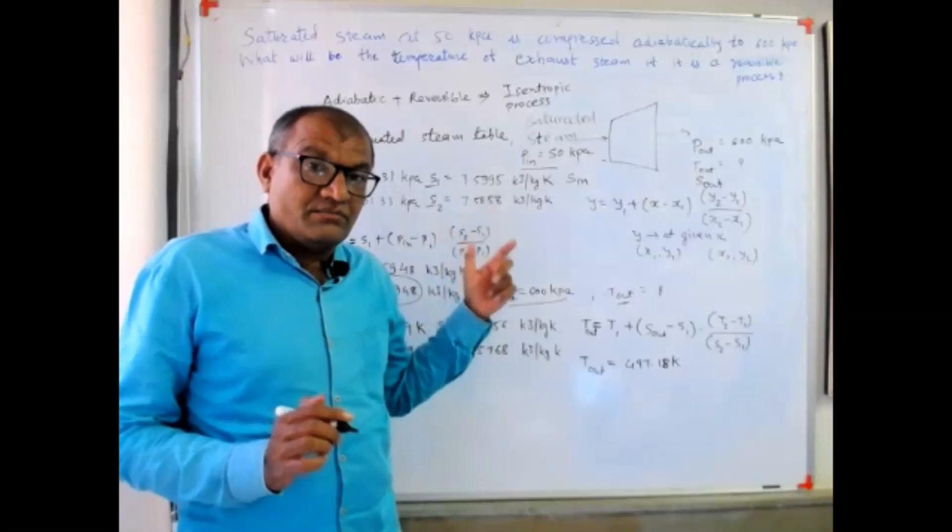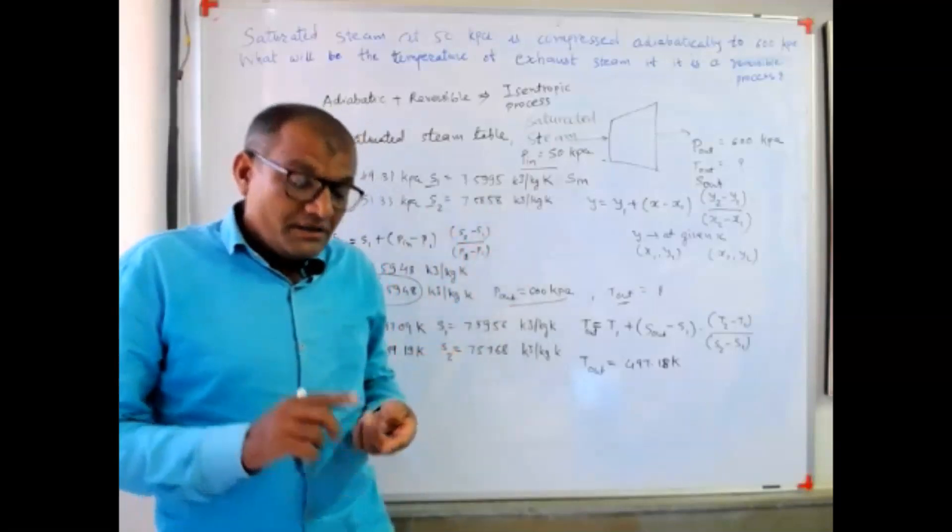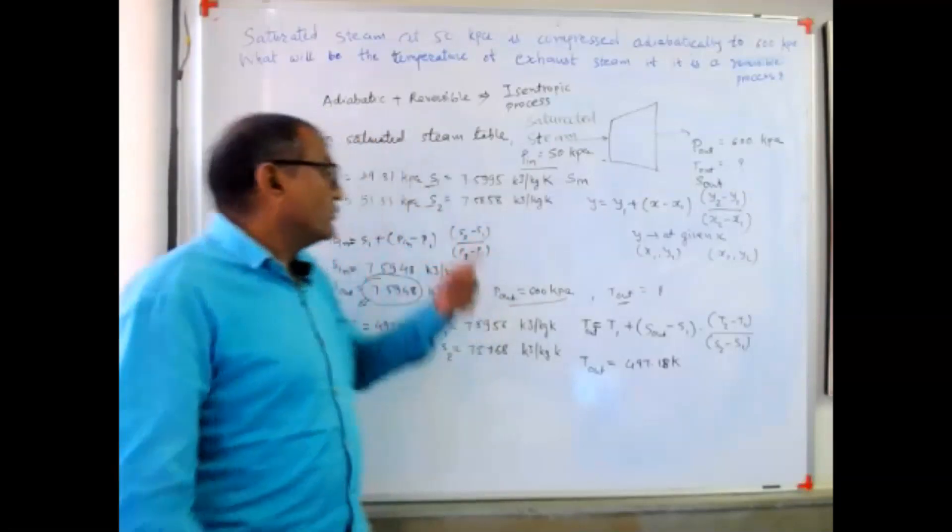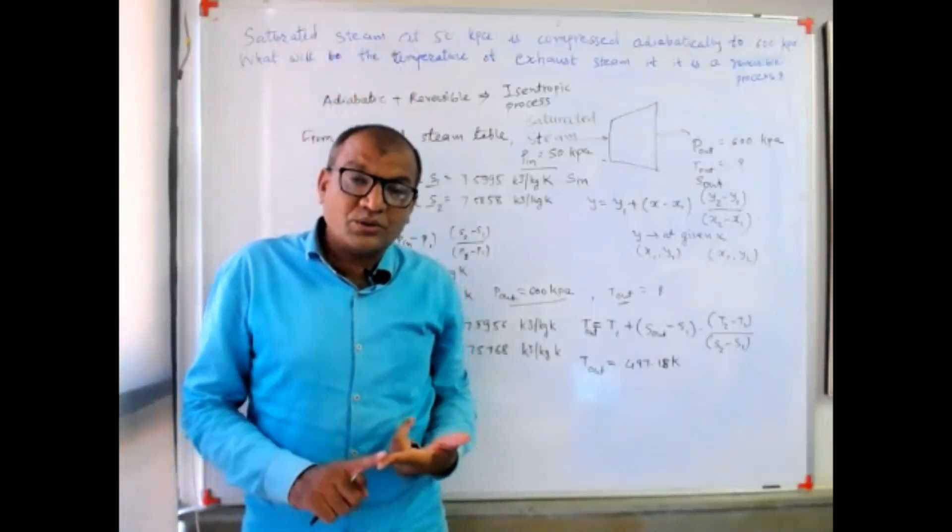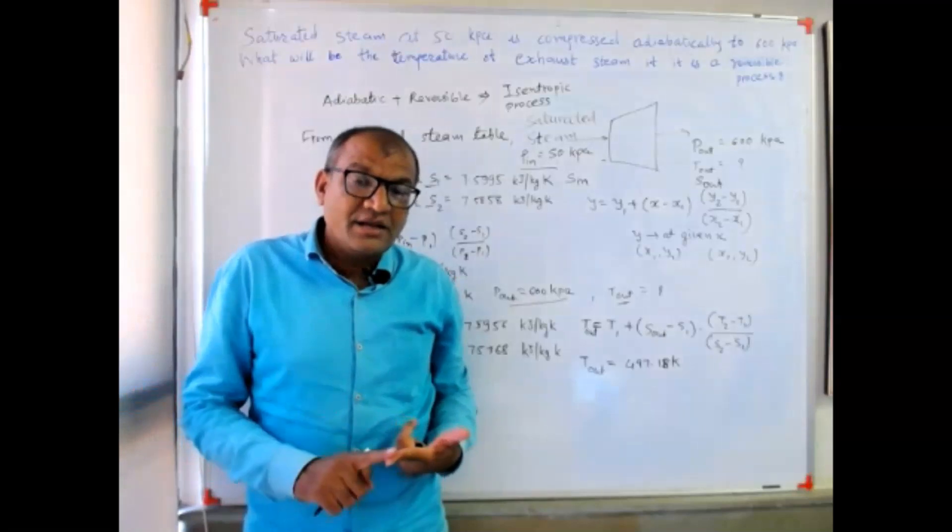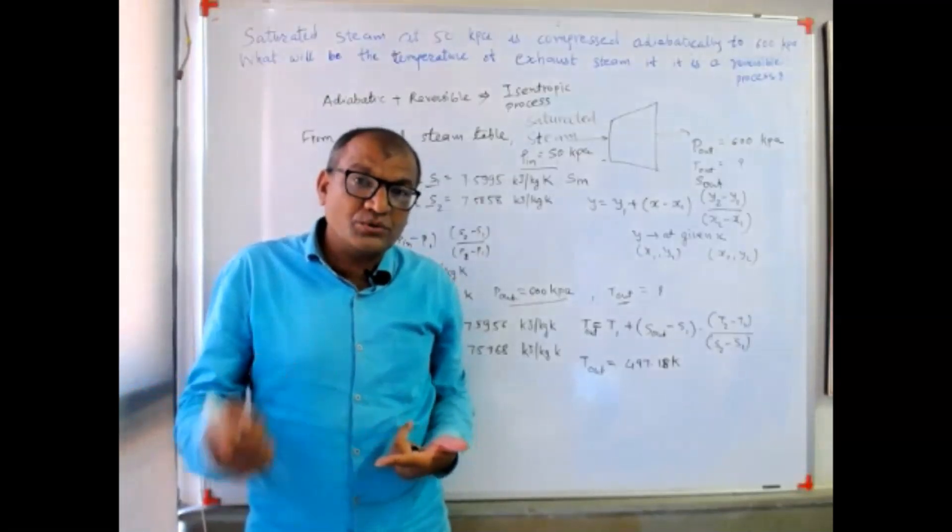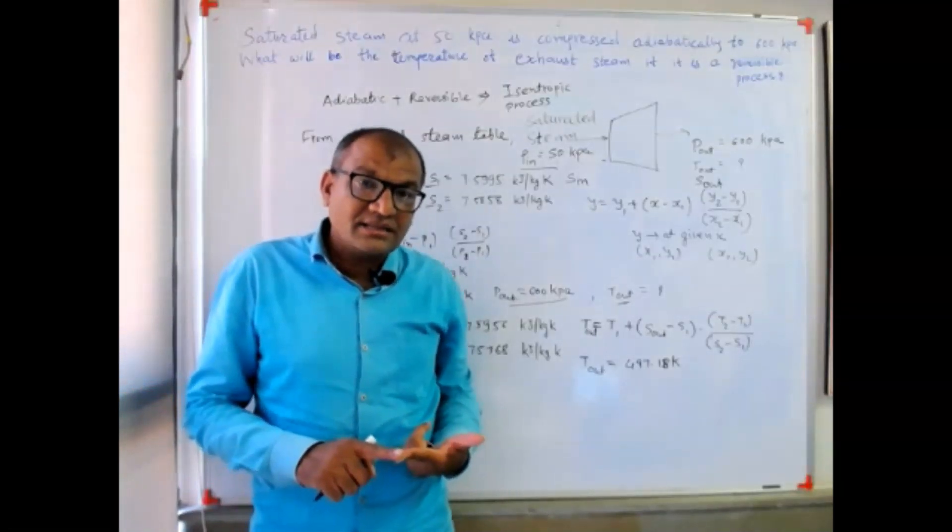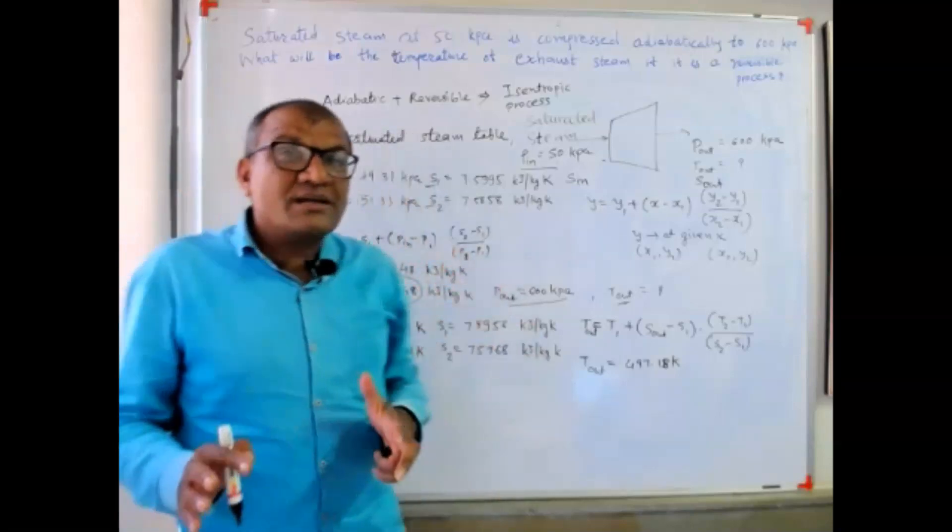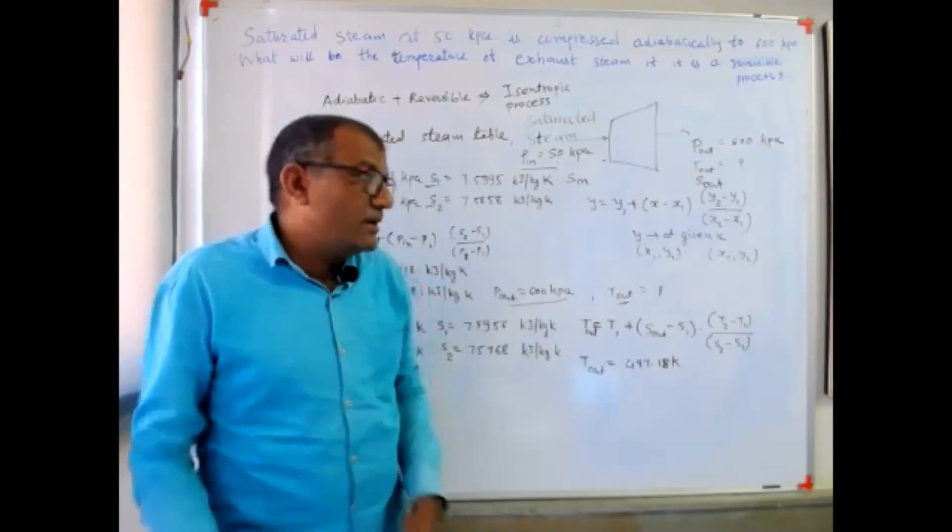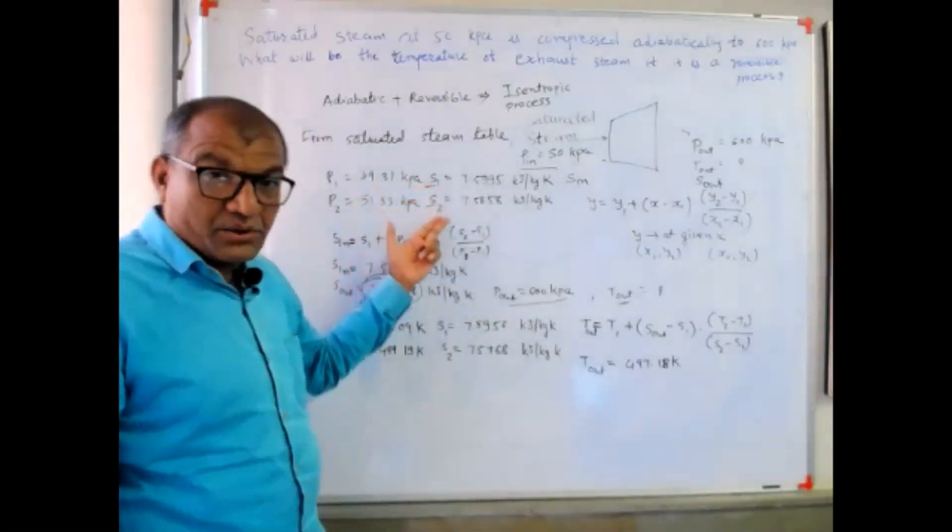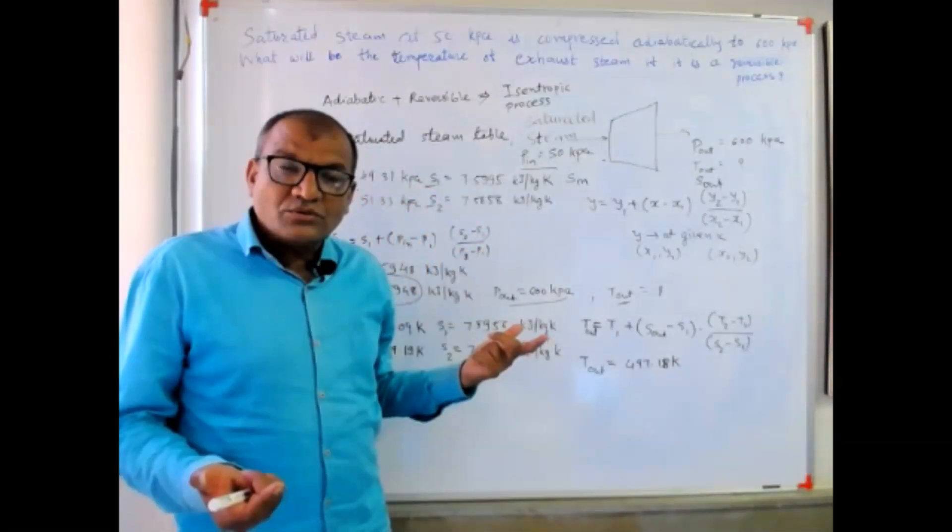When I insert all these values here then I am getting 497.1 degrees Celsius. This is the temperature of exhaust steam. This is a very simple problem if I solve using steam table. If I change the fluid instead of steam - if you are going to use any real gas or ideal gas - then you don't have steam table.